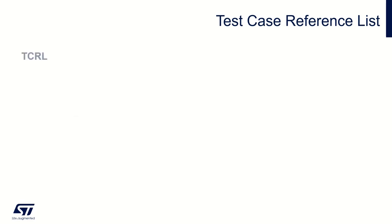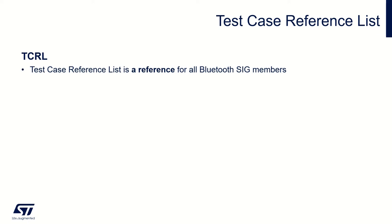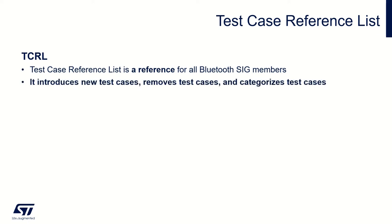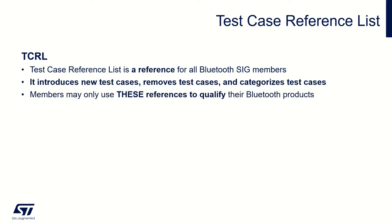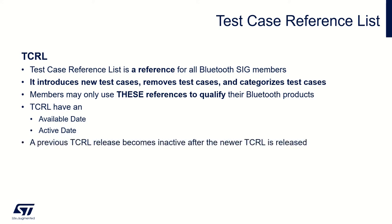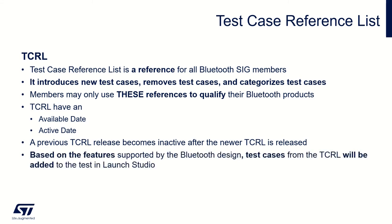The Test Case Reference List, or TCRL, is a qualification reference for all Bluetooth SIG members. It is a living document that introduces new test cases, removes test cases, and categorizes test cases. Members may only use these document references to qualify their Bluetooth product. All TCRLs have an available date and an active date: the available date represents when the TCRL is first published, and the active date represents when the TCRL is mandatory for qualification. A previous TCRL release becomes inactive after the newer TCRL release reaches its active date. Test cases from the TCRL are added to the design's test plan in the testing section of the required testing path in Launch Studio.